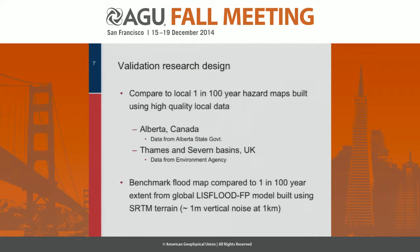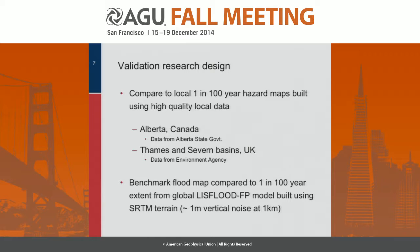The validation research design — this is our first attempt — is to compare these simulations of the 1-in-100-year floodplain to 1-in-100-year hazard maps built using high-quality local data, so these are FEMA-type maps. We've got them for Alberta in Canada from the Alberta state government, and from the Thames and Severn basins in the UK. The Alberta maps are HEC-RAS models built with ground-surveyed cross-sections and flows generated by local flood frequency analysis. The Thames and Severn are 1D/2D hybrid models built with either LiDAR or IFSAR. They're not perfect — nobody's saying these are truth — but they're certainly likely to be an awful lot better than our global model, so they're a good start for validation.